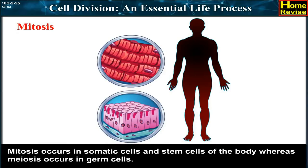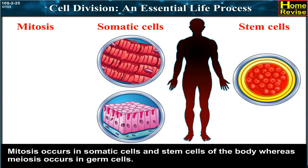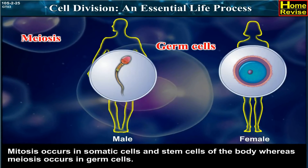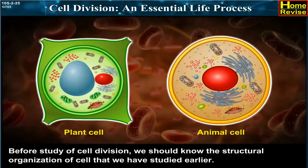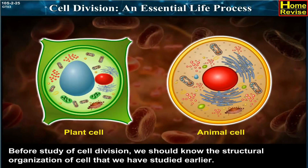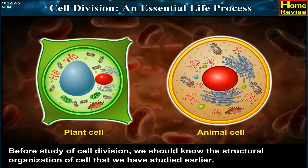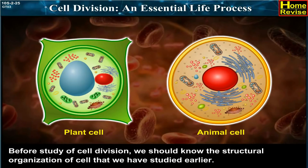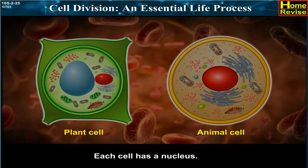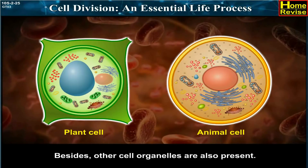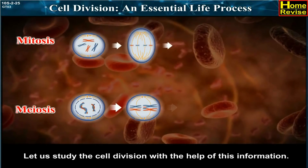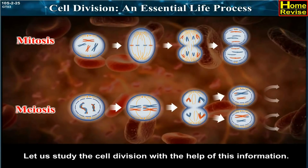Mitosis occurs in somatic cells and stem cells of the body, whereas meiosis occurs in germ cells. Before studying cell division, we should know the structural organization of the cell that we have studied earlier. Each cell has a nucleus, and other cell organelles are also present. Let us study cell division with the help of this information.